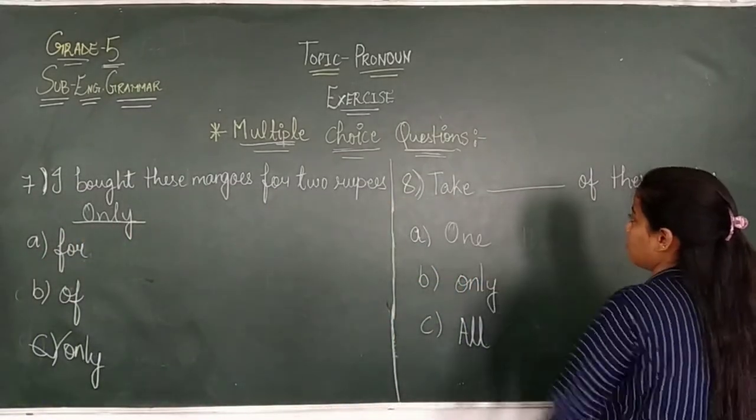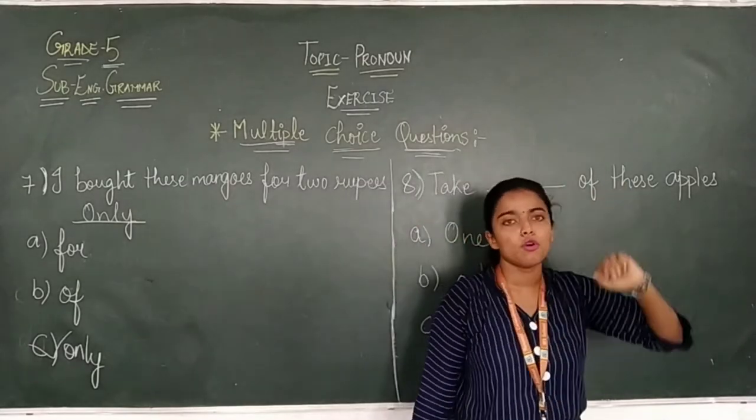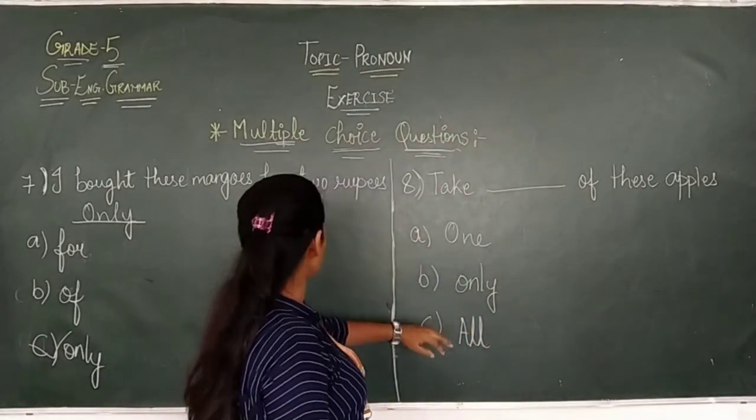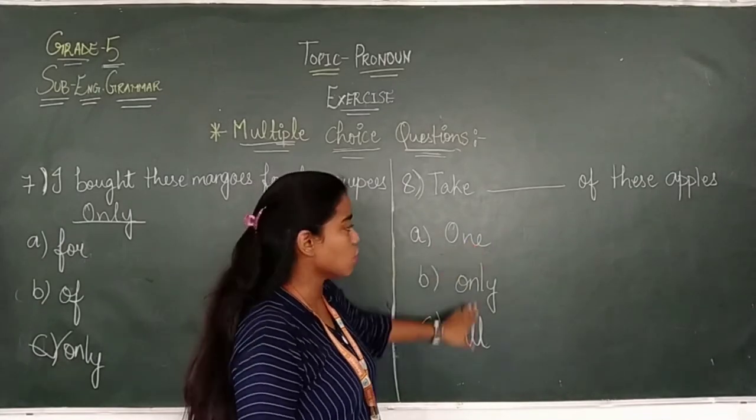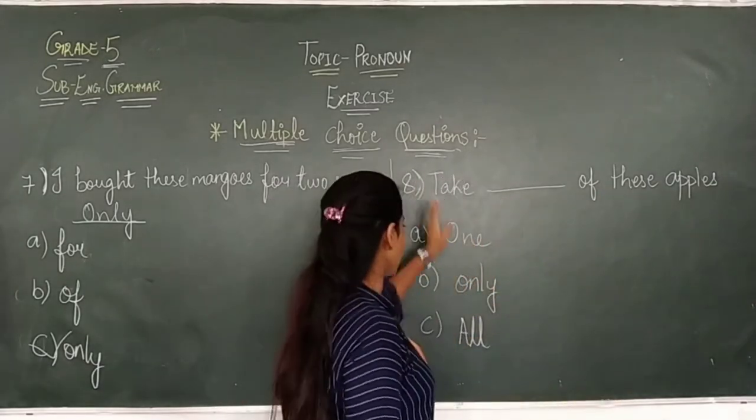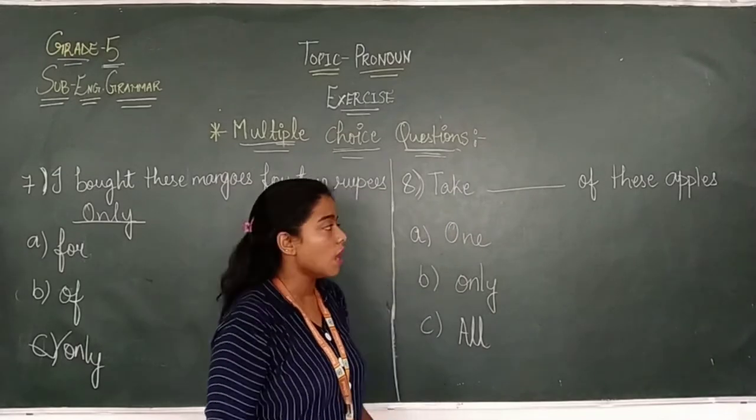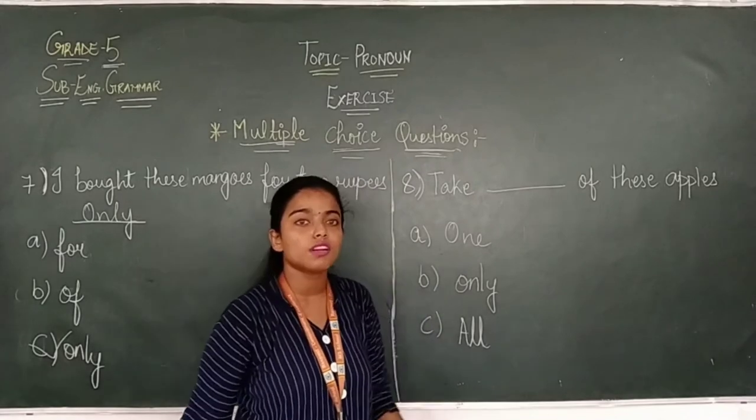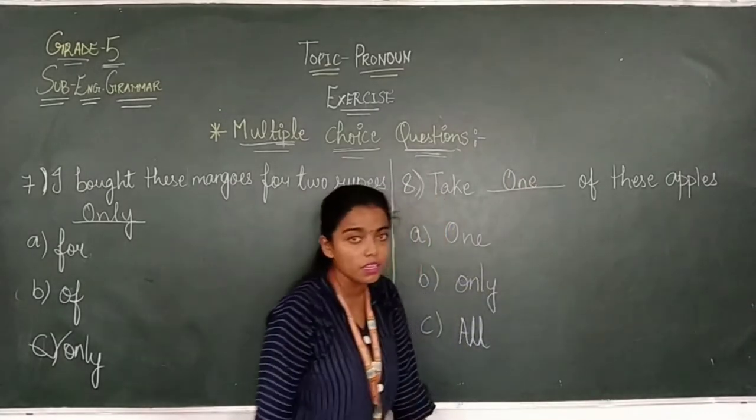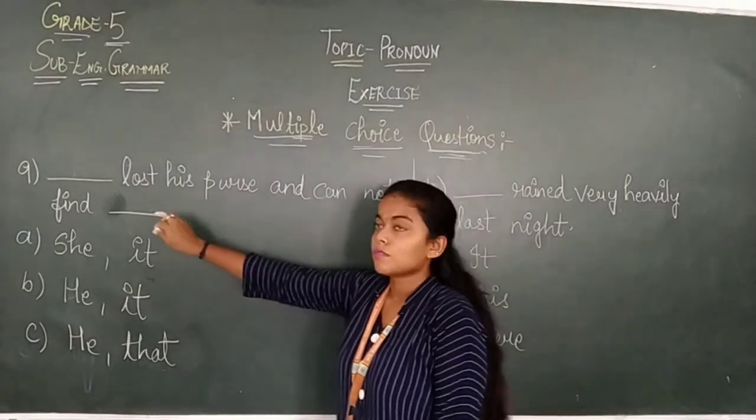Now, in the eighth number. Take of this apples. So, here we have many apples, but I want to eat one apple only. So what I will do? Let's see here options: one, only, and all. Take that of this apple. Take only of this apples. No. Take all of this apples. No. I want to eat only one. So, what I will do? Take one of this apples. Which pronoun I will use? One.